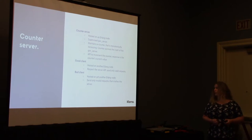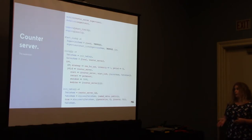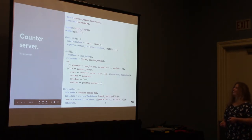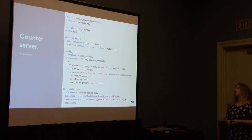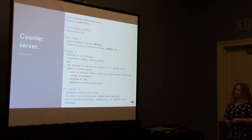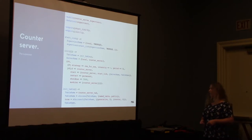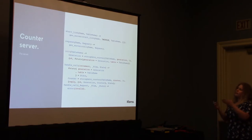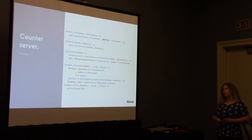Let's see how to implement this. First, we write a supervisor where we use the name registry of VNet. We register the supervisor as a local process and we register the server as a local process on the node. We maintain the state of the counter in an ETS table, and to survive the crash of the server, we initialize the table in the supervisor process so it's owned by the supervisor.